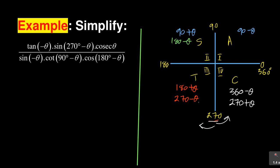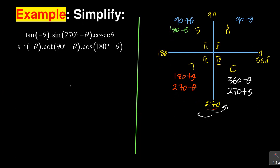Now, looking at this particular question, it involves tan minus theta, which means we need to know the reduction rules for negative angles. For negative angles, if you say minus theta it means you are opposing the direction — you are now moving clockwise. The normal direction is anti-clockwise: from zero, then 90, then 180.